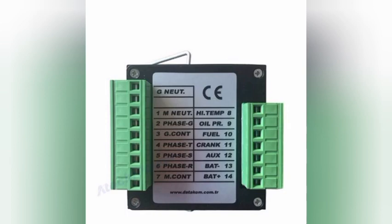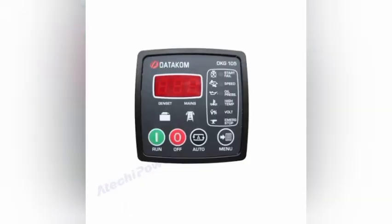Now we are going to explain the programming of this controller — how to program it and how to set the parameters. To enter programming mode, press the off button and then the menu button, and hold for four seconds.